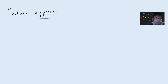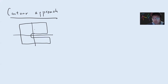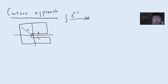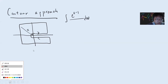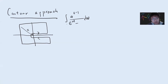The idea is as follows. Consider this integral — it can be a circle or a rectangle, it's fine. Say this is epsilon, and consider a circle or square of radius R (we will take R to infinity). Consider the function omega^(z-1) / (e^omega - 1) d-omega. This contour C is called the Hankel contour.